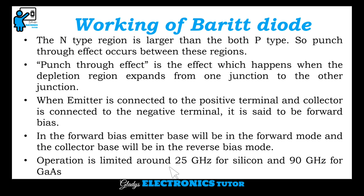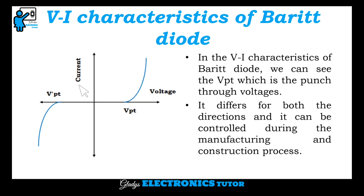Operation is limited around 25 gigahertz for silicon and 90 gigahertz for gallium arsenide. This is the VI characteristics of BARITT Diode. In the VI characteristics, we can see the VPT — that is, the punch-through voltage. It differs for both directions and it can be controlled during the manufacturing and construction process.